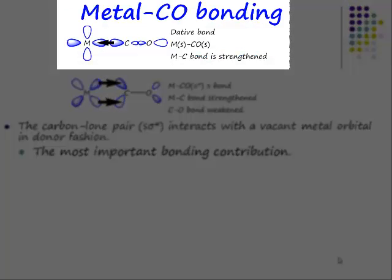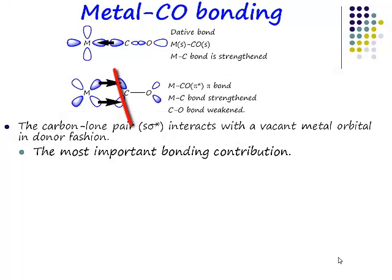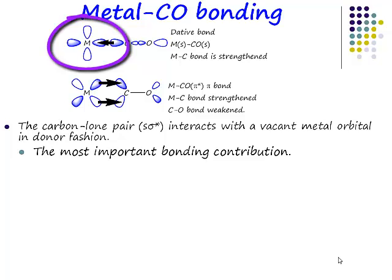This is the classic dative donor interaction. You take the HOMO of carbon monoxide, which is a lone pair on carbon, and donate it into a vacant orbital on the metal. Now if this metal was a classic octahedral metal like chromium hexacarbonyl, the metal d-orbital shown is going to be one of the EG set, because it's the EG set that points along the axis.